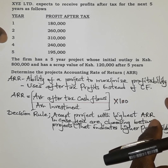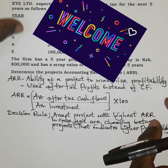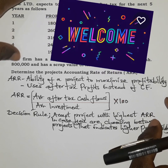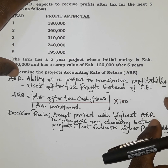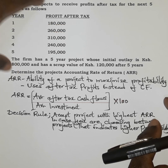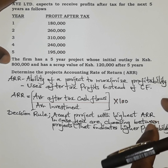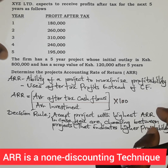Welcome. In this session we are going to examine the Accounting Rate of Return, which is an undiscounting technique for capital budgeting. It is used in determining the best project to invest in.